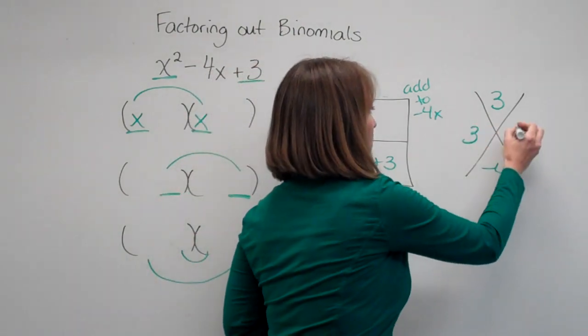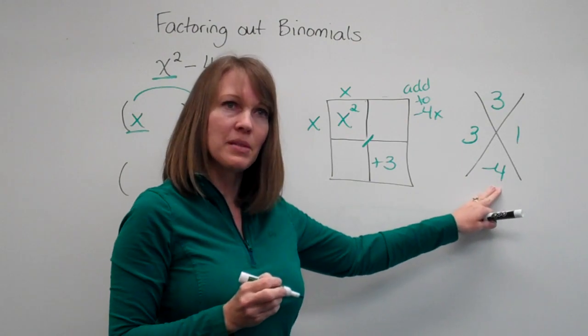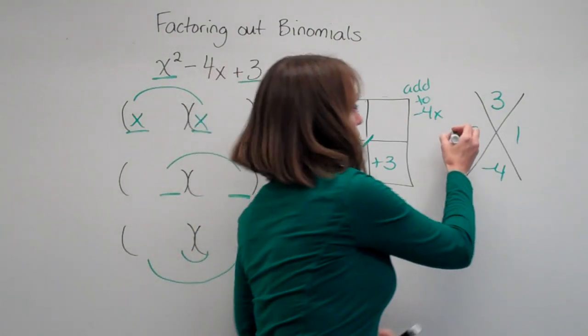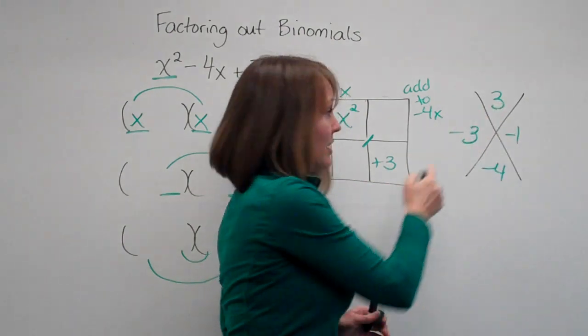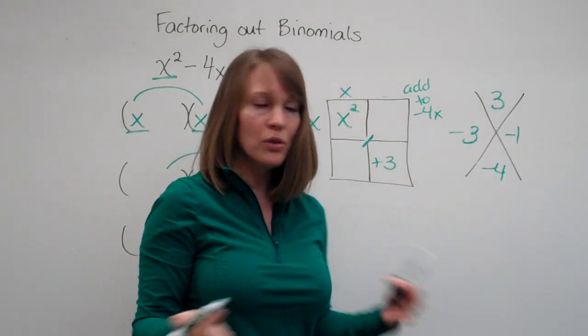So 3 and 1, but I need a negative 4 when I add them together. So if they're both negative, negative times a negative gives me a positive and they add up to get negative 4. Beautiful!